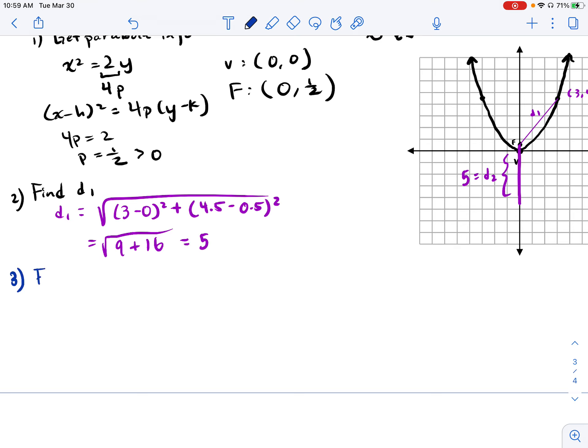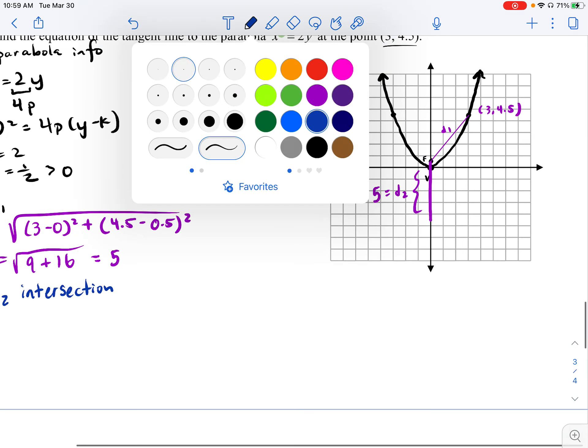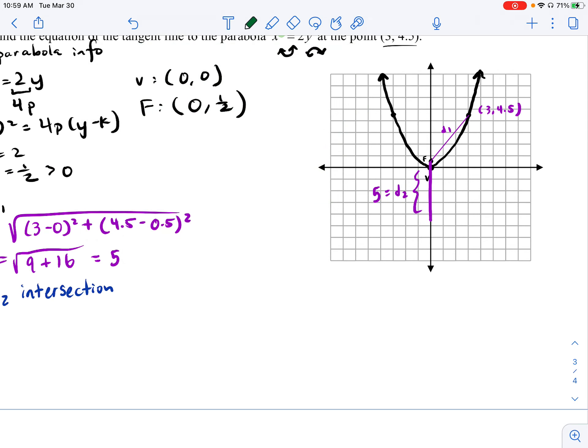So let's actually write that. Find D2 intersection. Where is that tangent line going to cross? And I haven't drawn the tangent line yet, so now would be a good time for me to do that. So let me draw that tangent line. So what we're seeing in this problem is that this tangent line is going to intersect my axis of symmetry at this point.